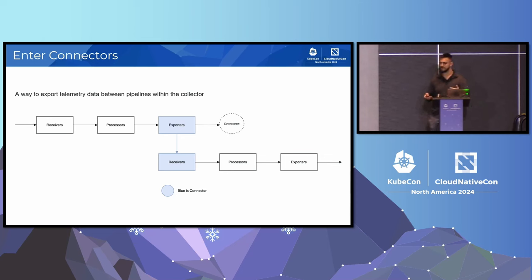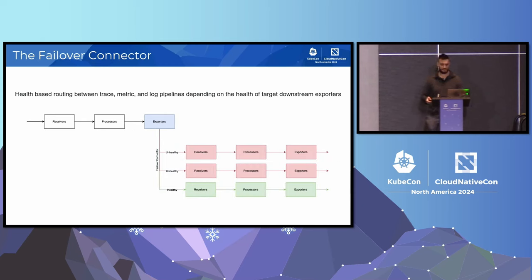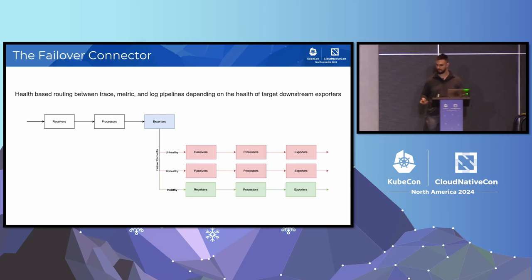Another cool thing about this is that it doesn't have to be a one-to-one mapping. You can actually have one exporter portion mapped to, let's say, five different starts of different pipelines. So that opens the door to essentially the failover connector. The failover connector, pretty intuitively, is essentially just a health-based router. The connector is going to route your traffic and determine which path is hot based off the health status of each pipeline. It'll always try to export to the highest priority pipeline that's healthy. So in this case, for example, we can assume the first two pipelines went down, so now it's exporting to the third.